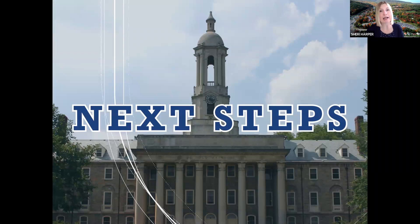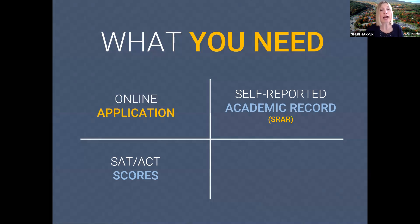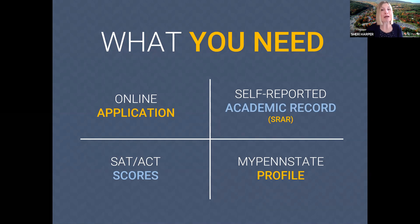At Penn State, there are three ways to apply: the Coalition Application, the Common Application, or our own My Penn State application. If you visit a Penn State campus outside of University Park before applying, we can waive your application fee — you'd need to submit the Penn State application to receive that waiver. To get started, create a My Penn State profile at admissions.psu.edu by clicking 'Login to My Penn State' in the top right corner, which gives you a user ID, password, and access to the application.